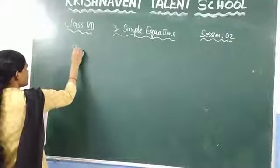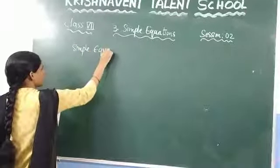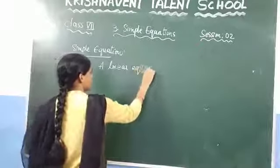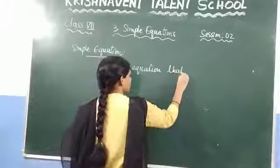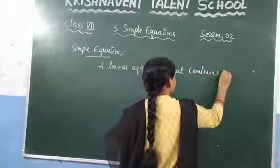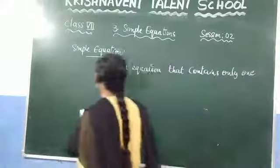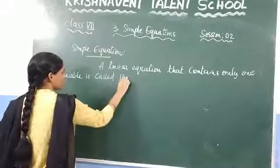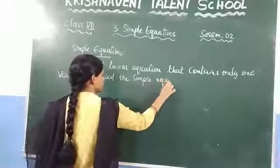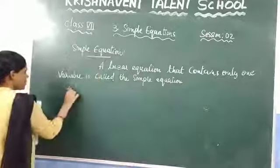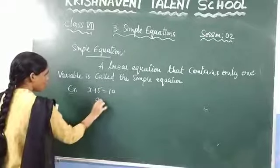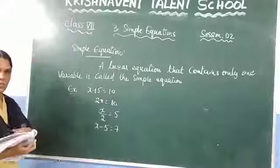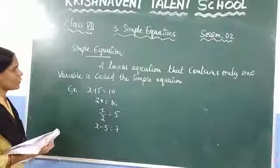Before the exercise, let us write the definition of a simple equation. A simple equation is a linear equation which contains only one variable. For example: x plus 5 is equal to 10, or 2x is equal to 10, or x divided by 2 is equal to 5, or x minus 5 is equal to 7. These are all simple equations because each contains only one variable and the degree of the variable is 1.